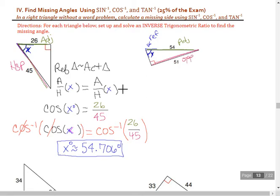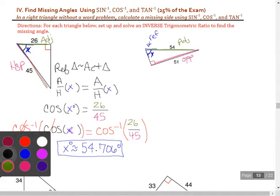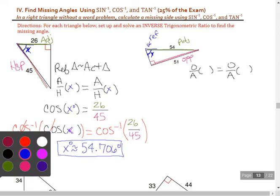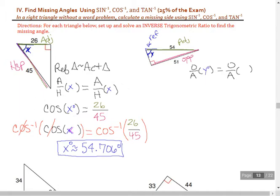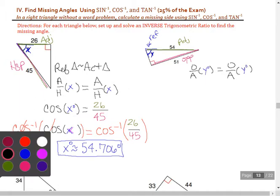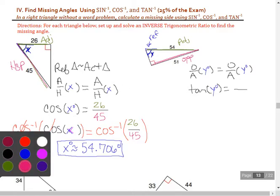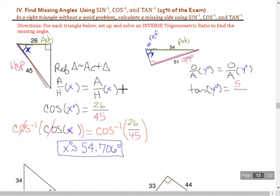We're dealing with adjacent and opposite, that feels like tangency. So we have opposite over adjacent equals the same ratio for our real triangle. This is in reference to angle y, O over A converts to tangent. Wait a minute, you guys spot my error?